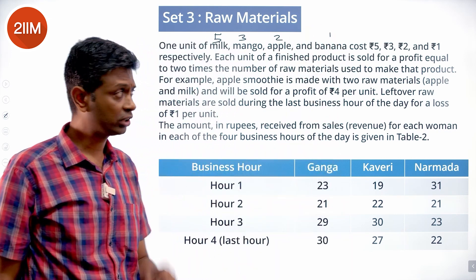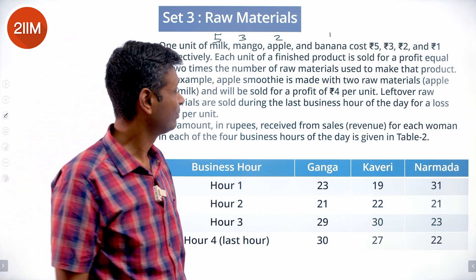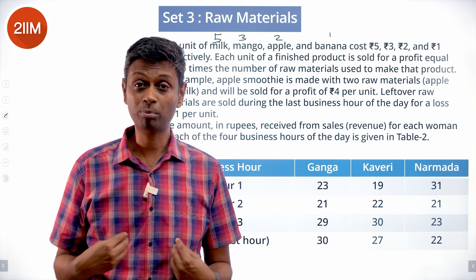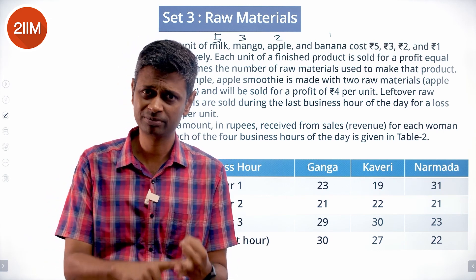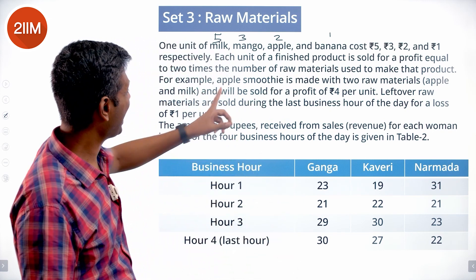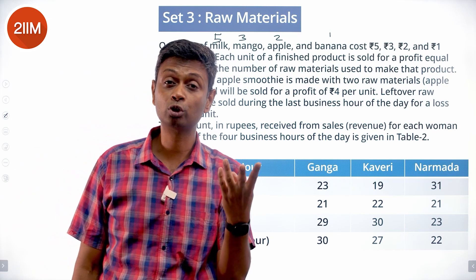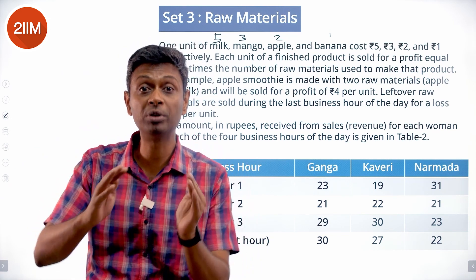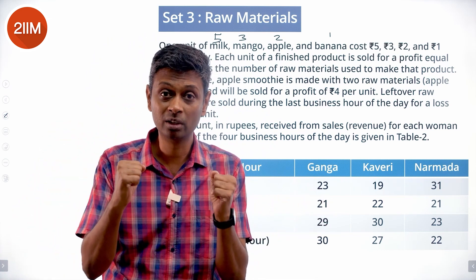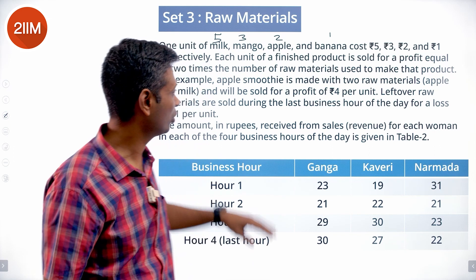Each unit of a finished product is sold for a profit equal to 2 times the number of raw materials — that many rupees. For example, apple smoothie is made with 2 raw materials and will be sold for a profit of rupees 4 per unit. So it is 2 times the number of materials in rupees — that part was missing from the original statement. There is a unit mismatch, but we live with it because the explanation is clear.